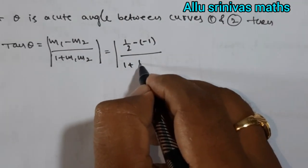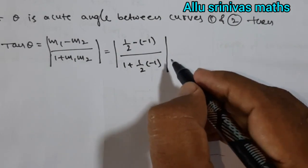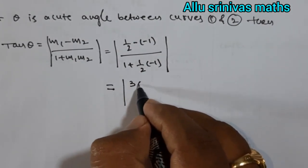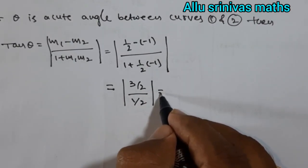1 plus m₁ is 1/2, m₂ is -1. And then simplify. 3/2 divided by 1/2 equals finally 3.